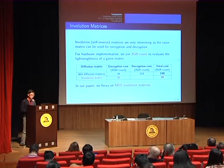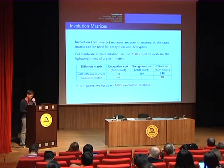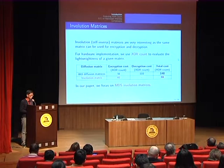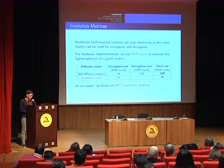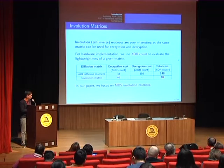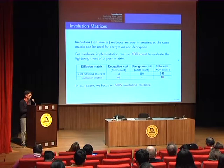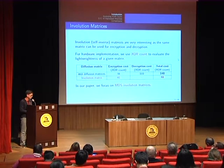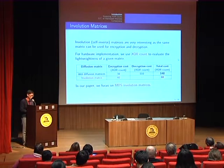An involution matrix is basically a matrix that is self-inverse. It's rather interesting to use them in hardware implementation when both encryption and decryption are required. For say the AES matrix, it has an XOR count of 38, which is lighter than an involution matrix. But because we do not need to implement the decryption matrix for involution matrix — we can reuse the same matrix — the total XOR count would be much lesser than implementing the AES diffusion matrix. So for our paper, we mainly focus on MDS involution matrices.